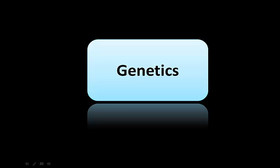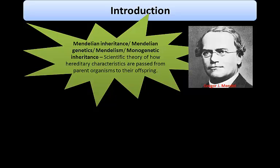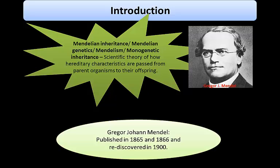Hi, this is Namrita Heda, and this is a new topic on genetics. In this presentation, I will cover the principles of Mendelian inheritance, also called Mendelian genetics, Mendelism, or monogenetic inheritance. This is a scientific theory of how hereditary characteristics are passed from parent organisms to their offspring. This theoretical framework was initially derived from the work of Gregor Johann Mendel, published in 1865 and 1866, and rediscovered in 1900.